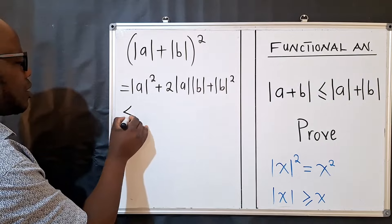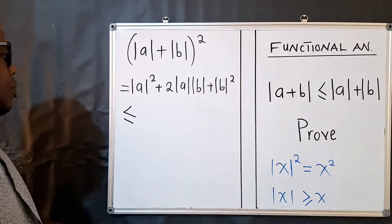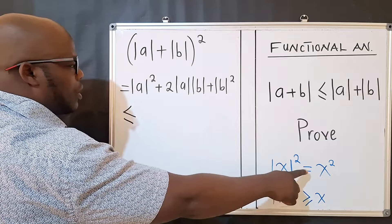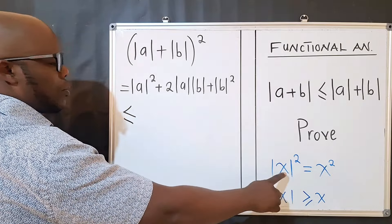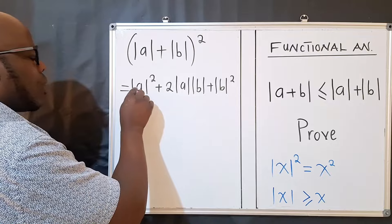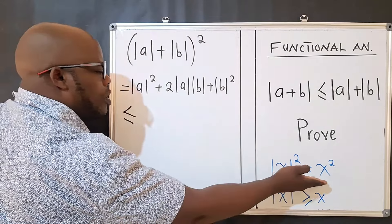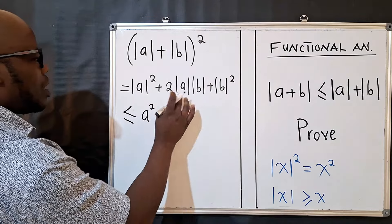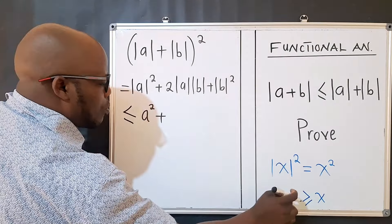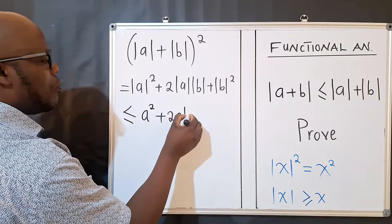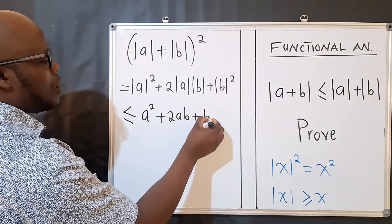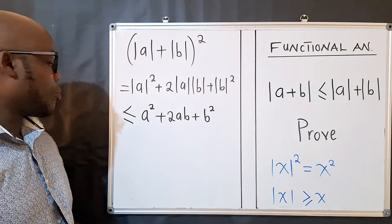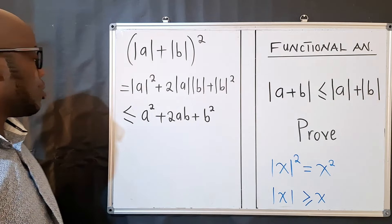From here I apply the properties. Where there is |a|², I use Property 1 to replace it with a², and similarly |b|² becomes b². For the middle term, using Property 2, |a||b| ≥ ab, so 2|a||b| ≥ 2ab. This gives us: ≤ a² + 2ab + b².